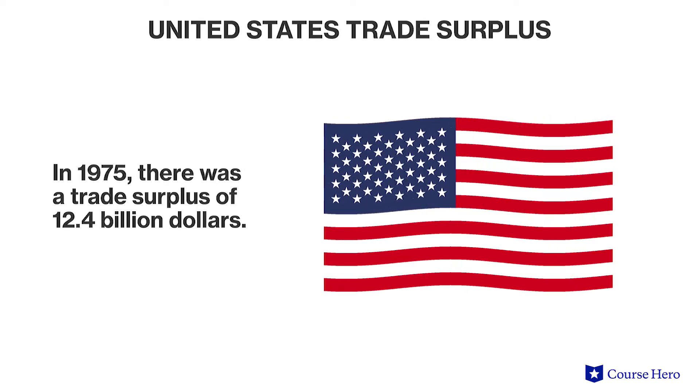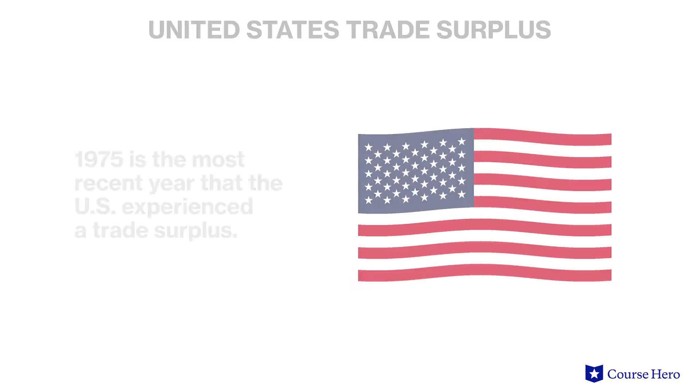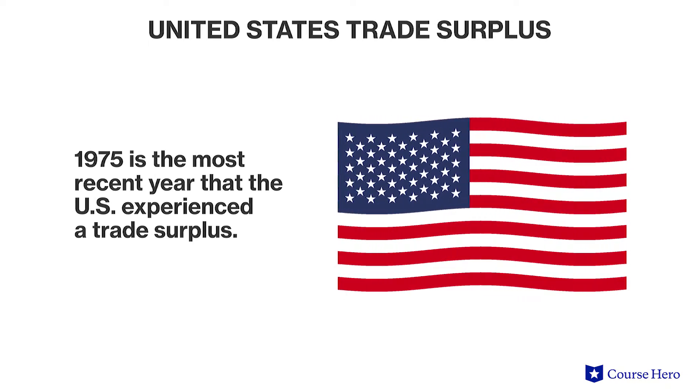Deficits and surpluses are typically expressed in terms of a nation's respective currency. For instance, in the United States in 1975 there was a trade surplus of 12.4 billion dollars, meaning the United States sold more through exports than it spent on imports. However, 1975 is the most recent year in US history that there has been a trade surplus, and many economists speculate it will be the last, because the US dollar is very strong, which leads to high demand for international goods.